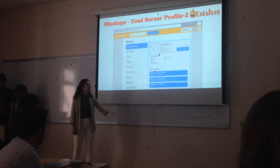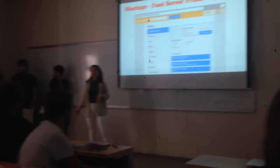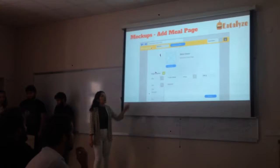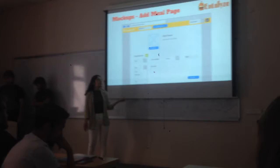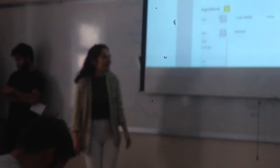As a food server, if I want to add a meal to my menu, I will be directed to the add meal page. In the add meal page, I will add a photo of the meal and I will add the meal name. Then I will add the ingredients one by one — like how much of each ingredient I need, like salt and the others. After that, if I click the add meal button, I will directly add the meal to the menu.